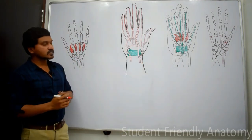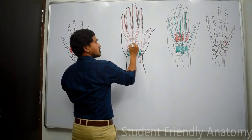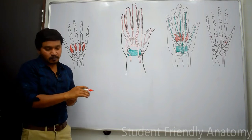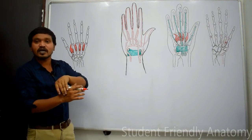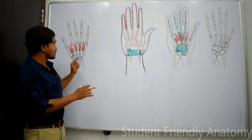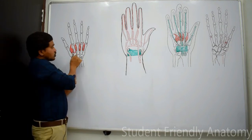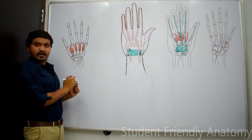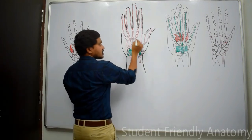The three perforating arteries pass dorsally through the spaces between the metacarpal bones — just as the radial artery passed through the gap between the two heads of the first dorsal interosseous, the three perforating arteries exit through the remaining three spaces to anastomose with the dorsal metacarpal arteries.